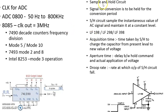We will see another important associated circuitry for analog to digital converters — the sample and hold circuit. ADC is an analog to digital conversion process which is time-consuming. During the conversion, the analog input voltage must be constant, but the input is typically a continuous time-varying signal.